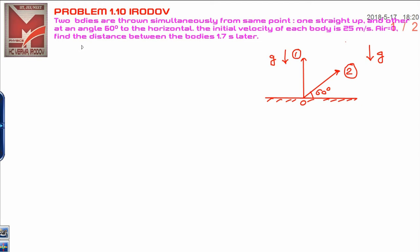Dear student, today I am going to discuss question number 1.10 from IE Rudoo. In this question, there are two bodies thrown simultaneously from the same point, one straight up and the other at an angle of 60 degrees to the horizontal.